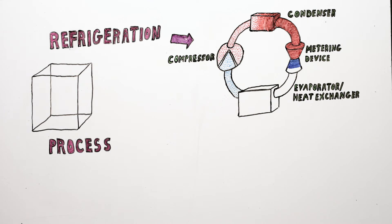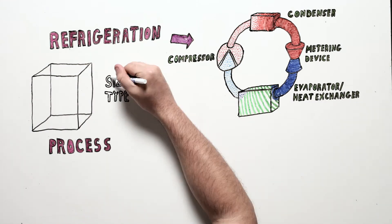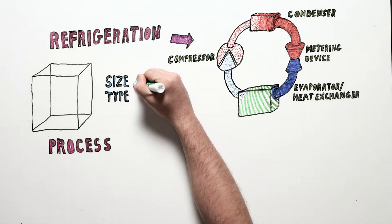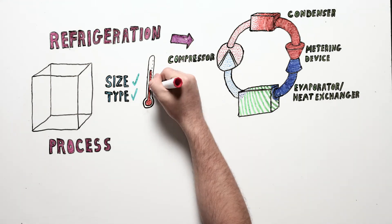The metering device reduces and regulates the pressure of the liquid refrigerant. The evaporator or heat exchanger takes advantage of the lower pressure and lower evaporation temperature to remove heat from the process fluid. Each of these components is selected by size and type to work efficiently to remove the amount of heat being produced and at the temperature required by the application.